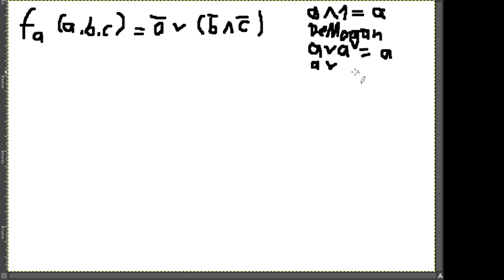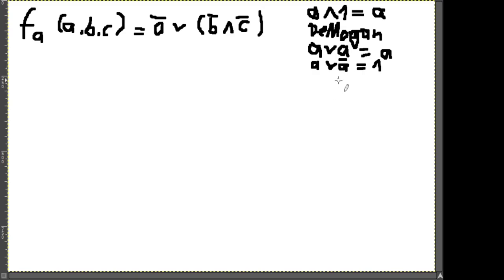Wichtig: a oder nicht-a ergibt den Wahrheitswert 1 – eins von beiden wird immer stimmen. Und a und nicht-a ist immer 0, das kann nie gleichzeitig wahr sein. Zur Schreibweise: wenn man a und b hat, lässt man häufig den Verbinder weg und schreibt nur a, b – implizit ist aber noch ein Und dazwischen.